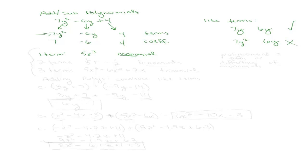If a polynomial has only one term, we call it a monomial. If we have an expression with two terms — for example, one-third r minus one-half — we call that a binomial. Bi meaning two, two terms.